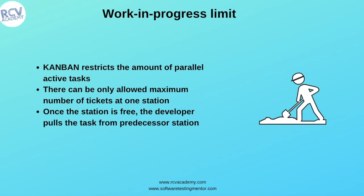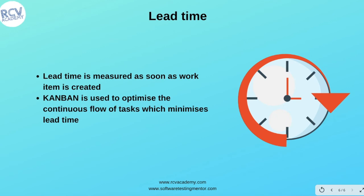Once a station is free, the developer pulls a task from the predecessor station. For example, if you have defined that In Development can have only 10 tasks at a time, as soon as the count drops from 10 to 9, the developer pulls another task from the previous station into the development column.